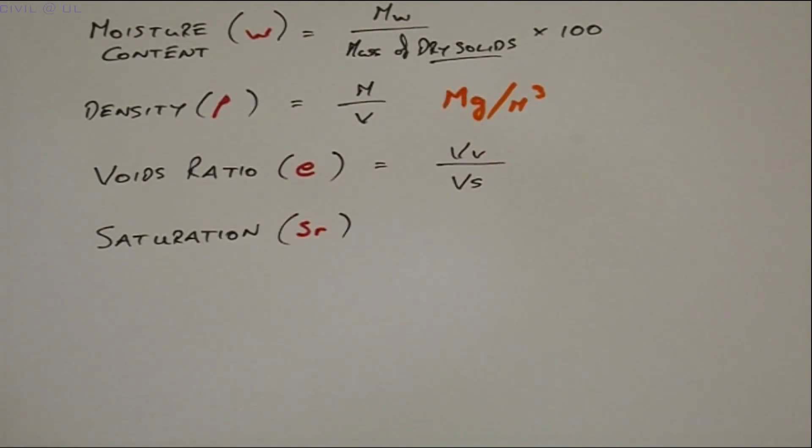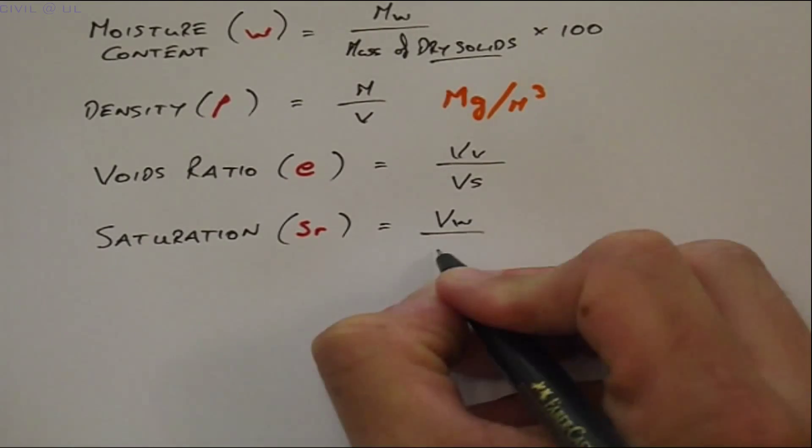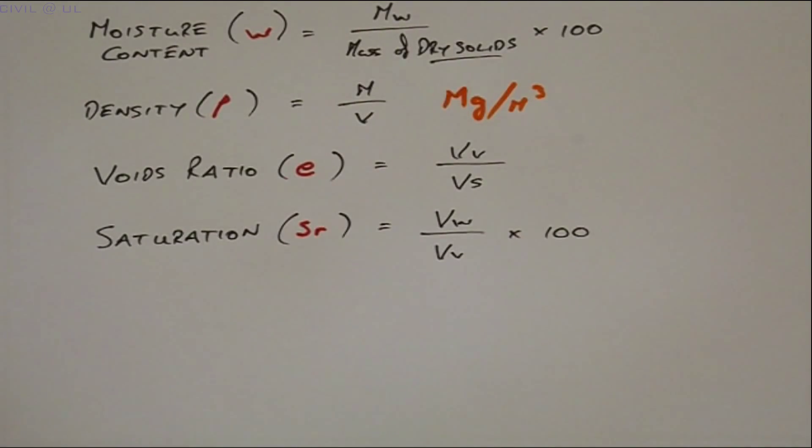Saturation is equal to the volume of water divided by the volume of voids, again expressed as a percentage.